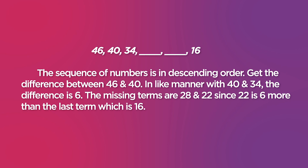Here is another number pattern: 46, 40, 34, 16. The sequence of numbers is in descending order. Get the difference between 46 and 40, and likewise between 40 and 34. The difference is 6. The missing terms are 28 and 22, since 22 is 6 more than the last term, which is 16.